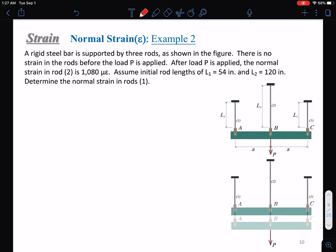First, let's look at what we're determining. We're determining the normal strain in rod one, epsilon one.